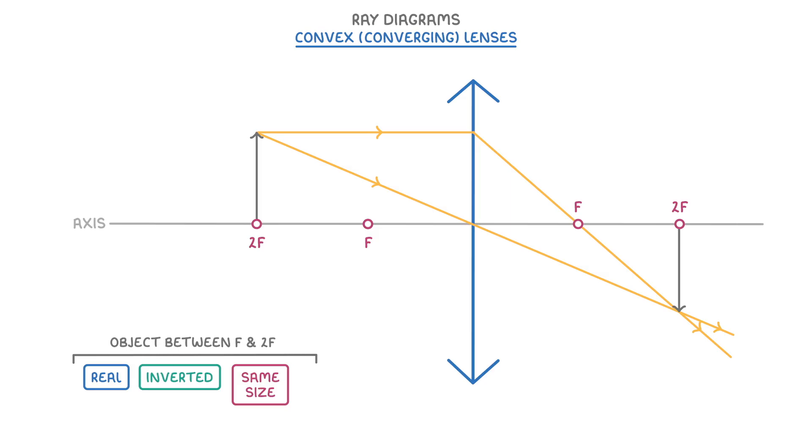Or if it was between f and 2f, then it would be real, inverted, and larger than the object.